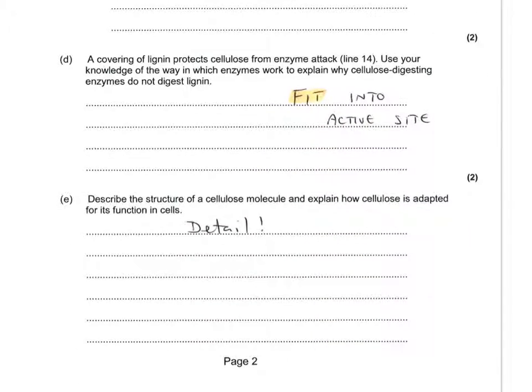For question D, quite disappointed with the answer to this, and a lot of students are not getting across the idea that the lignin will not be able to fit into the active site of cellulase, because enzymes have a specific shape. Lignin, because it's a different shape, it's not complementary to the shape of the active site of cellulase, so it cannot fit into the active site. That word fit is quite important, and make sure you say active sites, not enzymes.